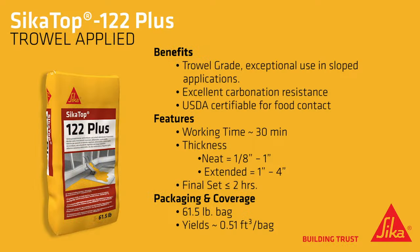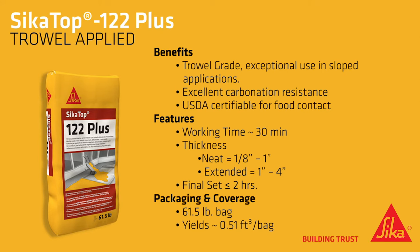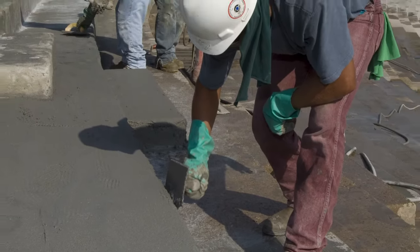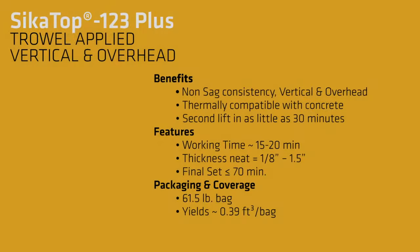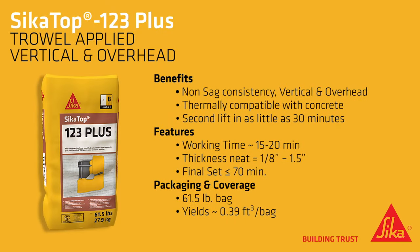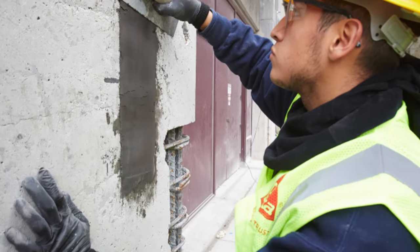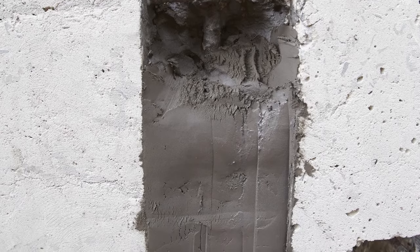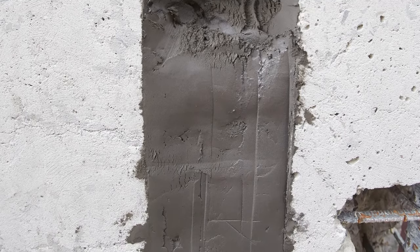Sika Top 122 Plus is a trowel grade mortar for horizontal repair applications. Its consistency is very useful for repairing steps, curbs, and ramps, and the mortar may be extended for deeper applications. Sika Top 123 Plus is a trowel grade mortar for vertical and overhead applications. Its non-sag consistency allows for lifts up to 1.5 inches deep on overhead surfaces, and thanks to its fast set, subsequent lifts can be applied in as little as 30 minutes.